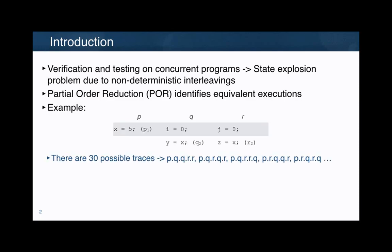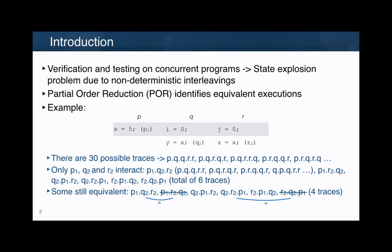we have three processes P, Q, R with these instructions. If we do an exhaustive exploration, then we will have 30 traces. Partial order reduction is able to identify that many of them are actually equivalent. And actually, in this example, there are only four different equivalent traces producing different results, mainly because out of the five events we have here, only three of them are actually interacting.